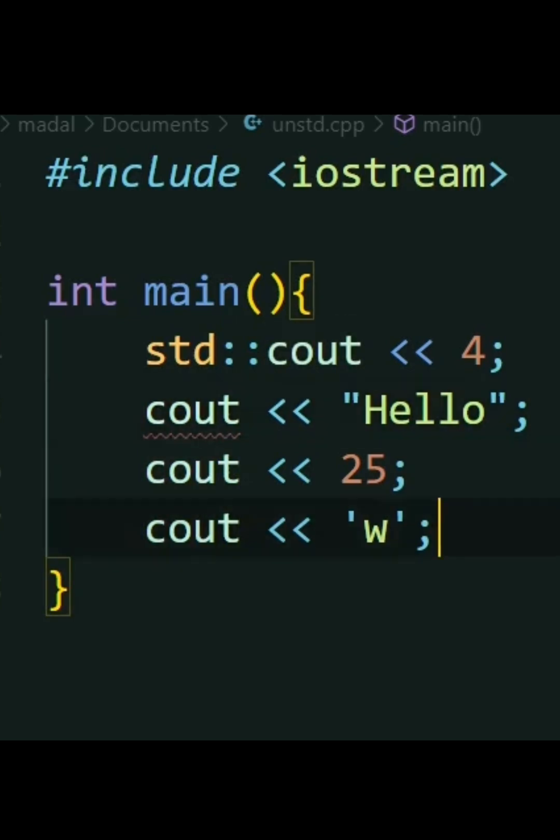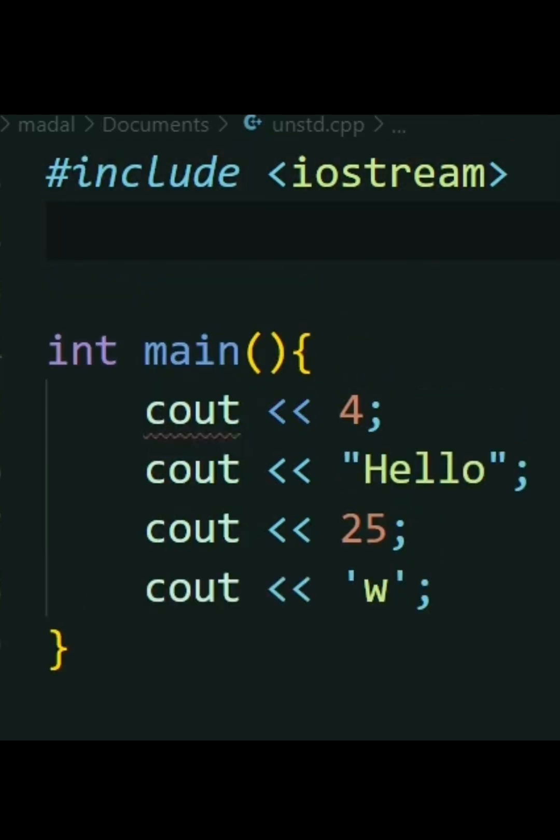Now, this isn't optimal at all because, for example, in this case I have four couts. In each one of them, I would have to say std::cout. This gets a little bit repetitive, and so an alternative to this is,